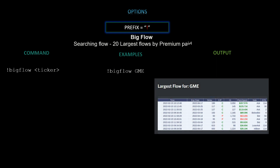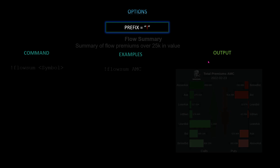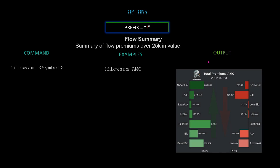Next we have big flow — this searches the 20 largest flows by premium paid. The command is `!bigflow [ticker]`. In this example we used GME, and the output shows the largest 20 flows for GME.